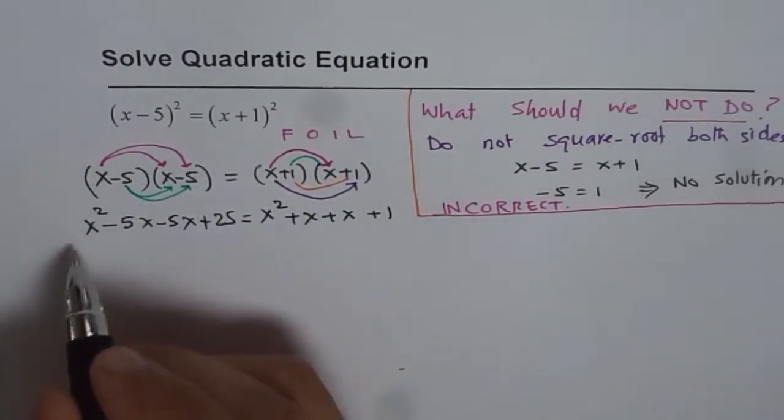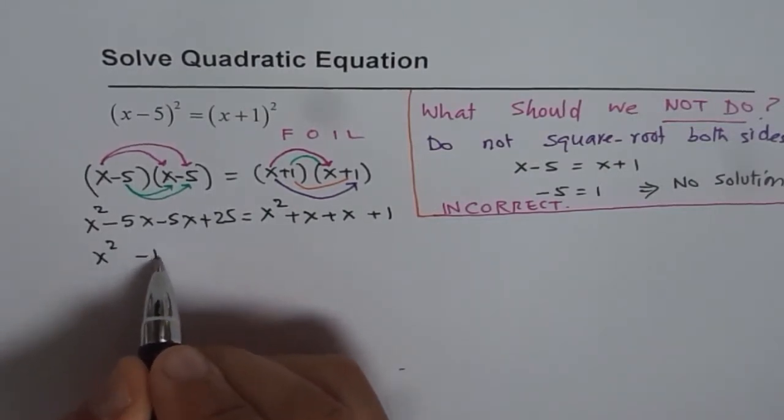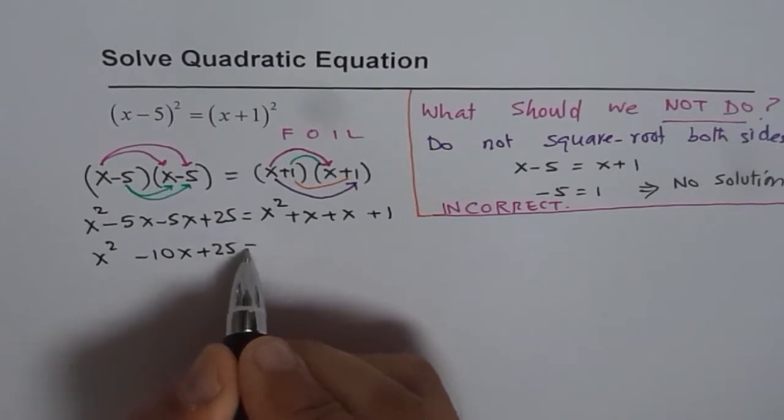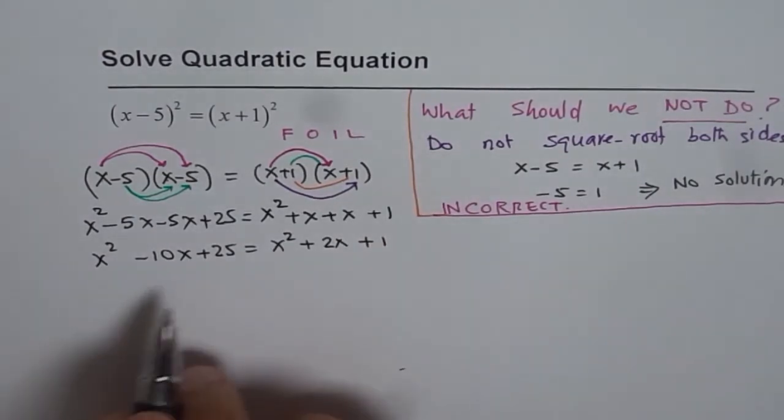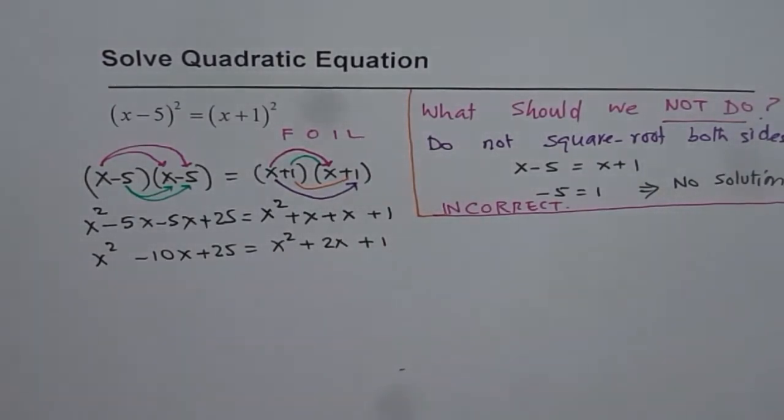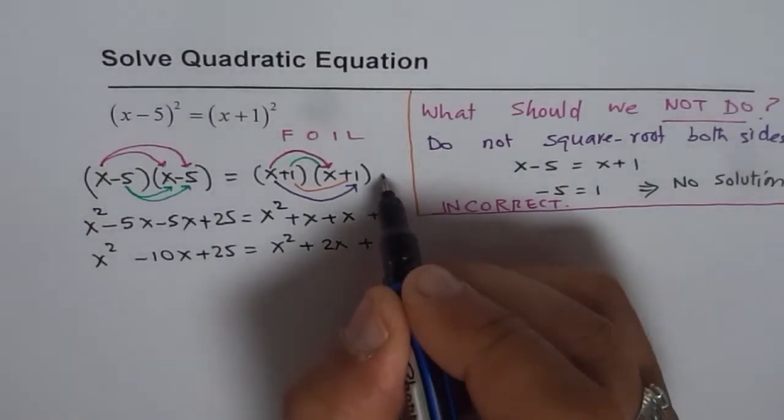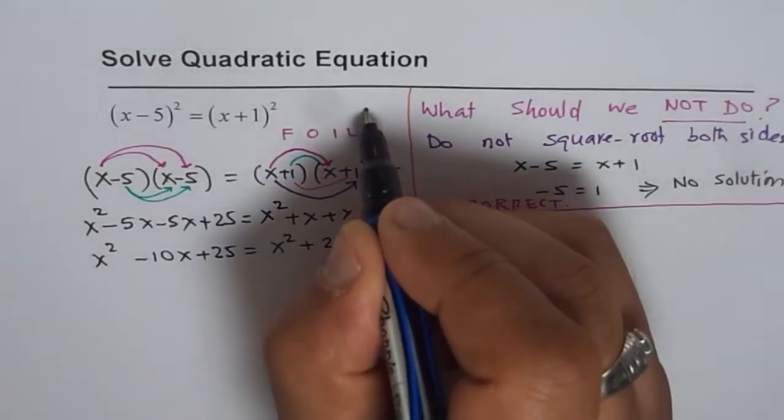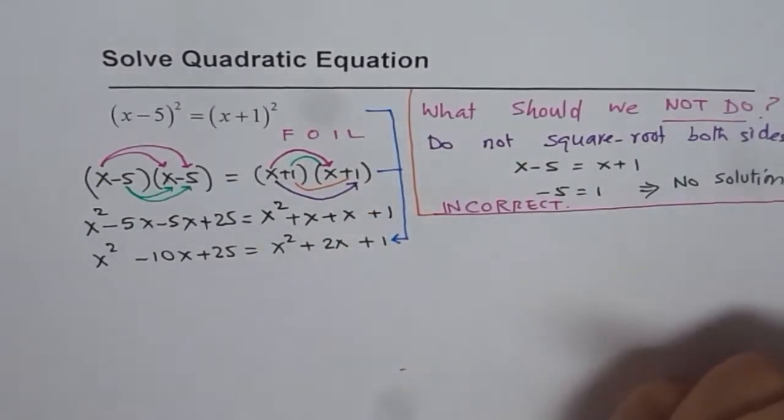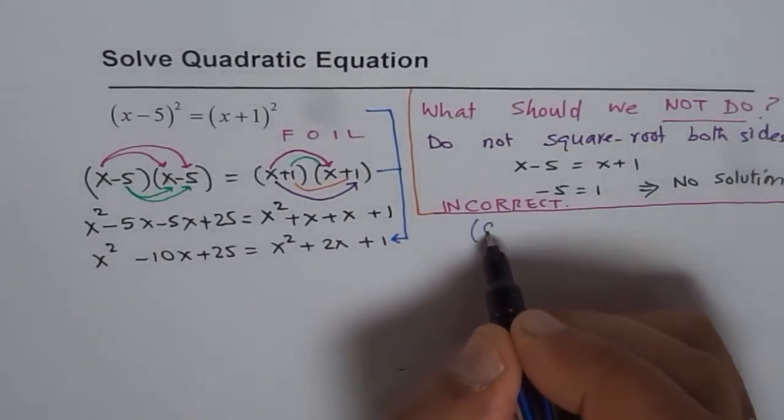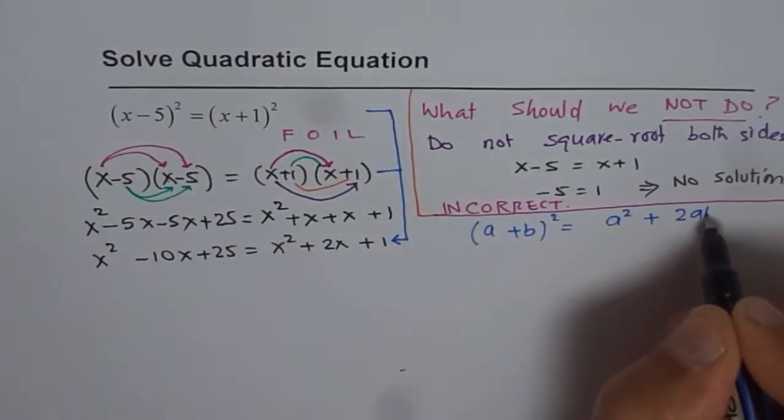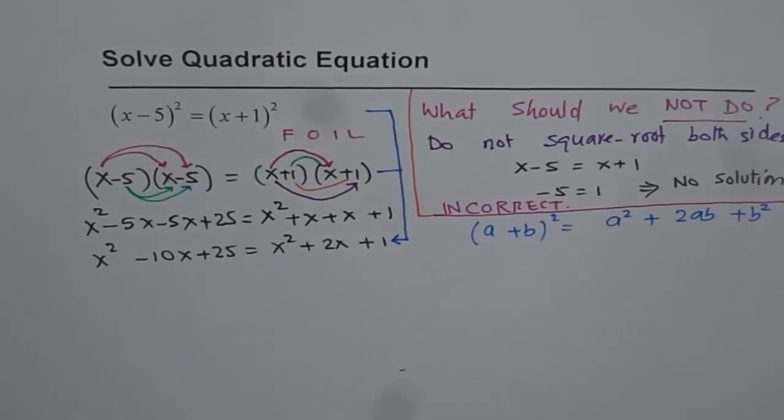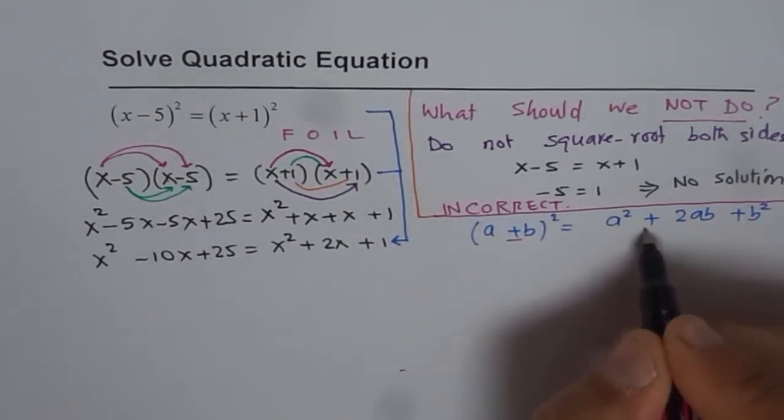We have x squared minus 10x plus 25 equals x squared plus 2x plus 1. Now at this stage, you have two quadratic equations on either side of the equation. We could have come straight to this step by using quadratic formula also.